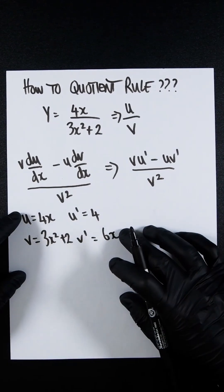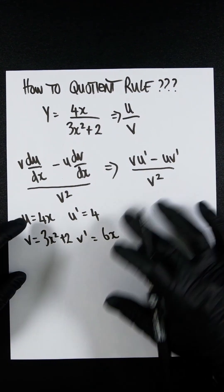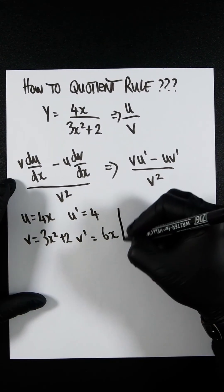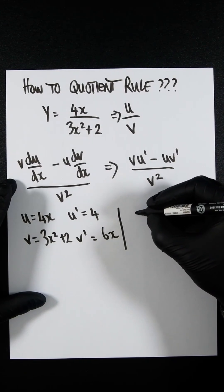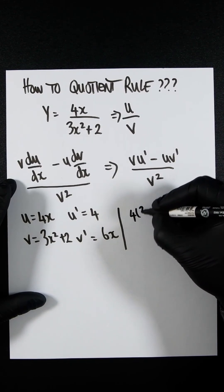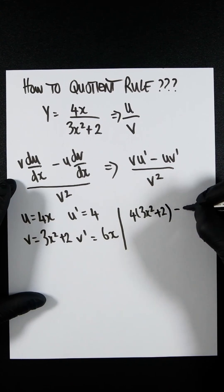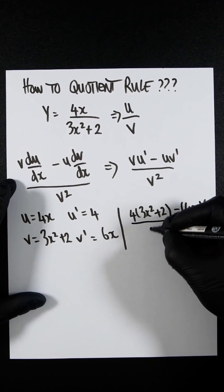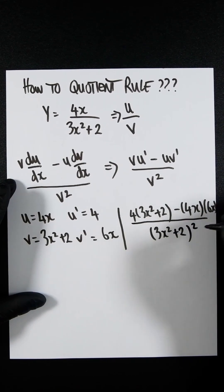We now just plug these in. So v u dash minus u v dash, all divided by 3x squared plus 2. So let's plug that in. We're going to get 4 times 3x squared plus 2, minus 4x times 6x, all divided by 3x squared plus 2, all squared.